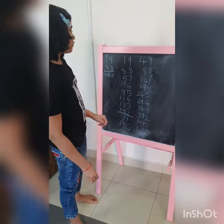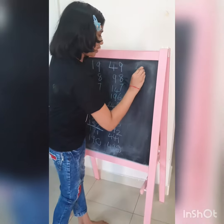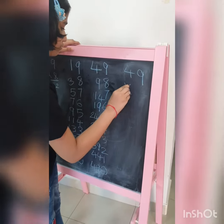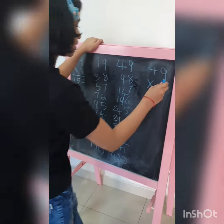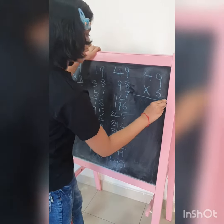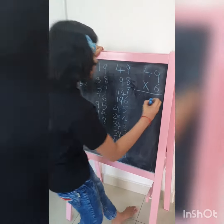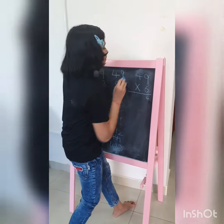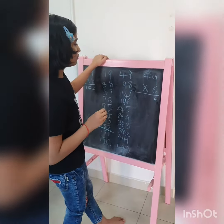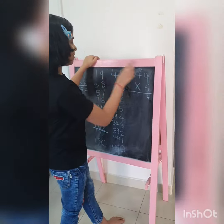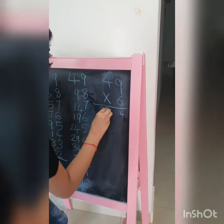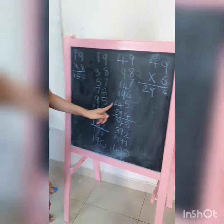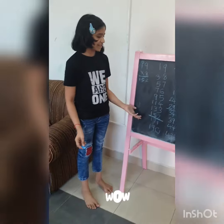So let's recheck for 49. So 49 times 6: 6 nines are 54, write 4 carry 5. 6 fours are 24, plus 5 is 29. See here — both are same. That means this is correct.